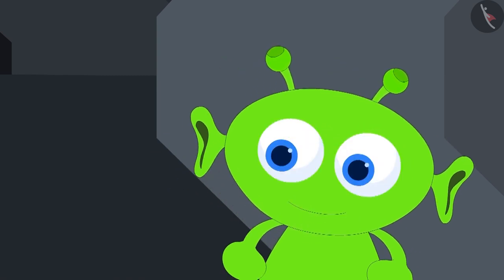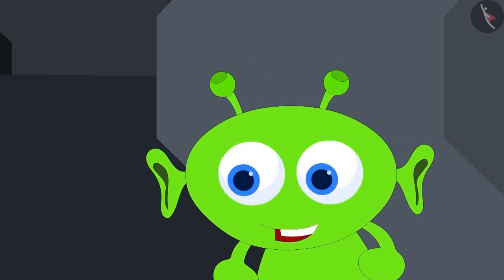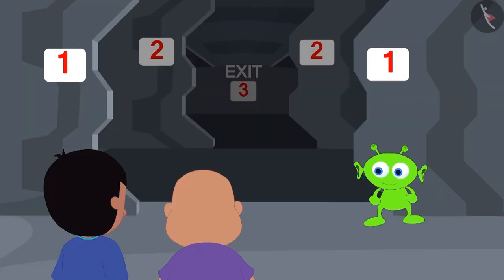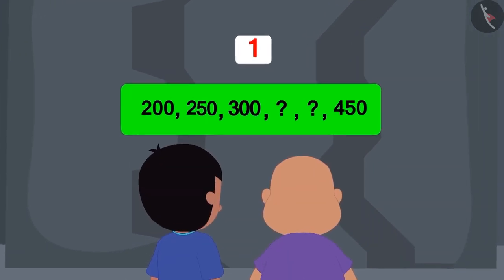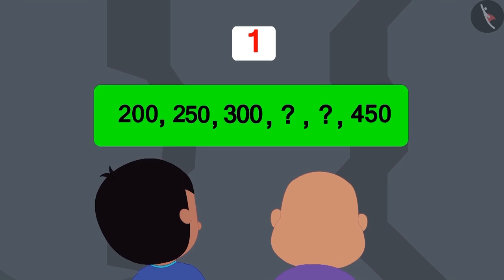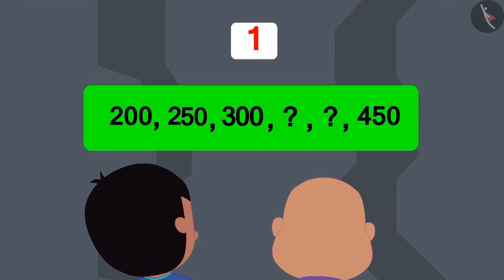This spaceship has three doors. Each door has a code on it. If you can correctly solve the codes on all three doors, only then you will be able to go back. Jeev said this and disappeared.